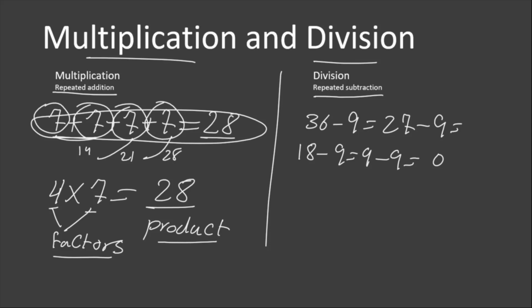How many times did we subtract 9 from 36? 1, 2, 3, and 4. We subtracted 4 times. If we are going to subtract a number from a bigger number so many times, it takes a lot of time. Instead, we use division.